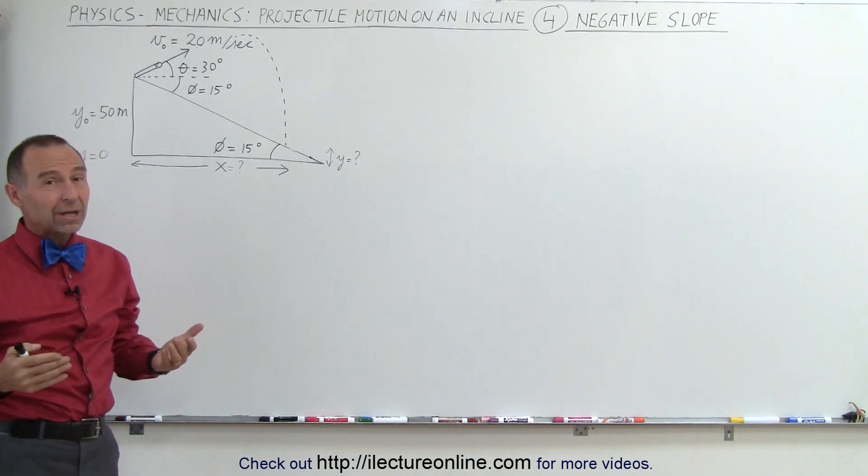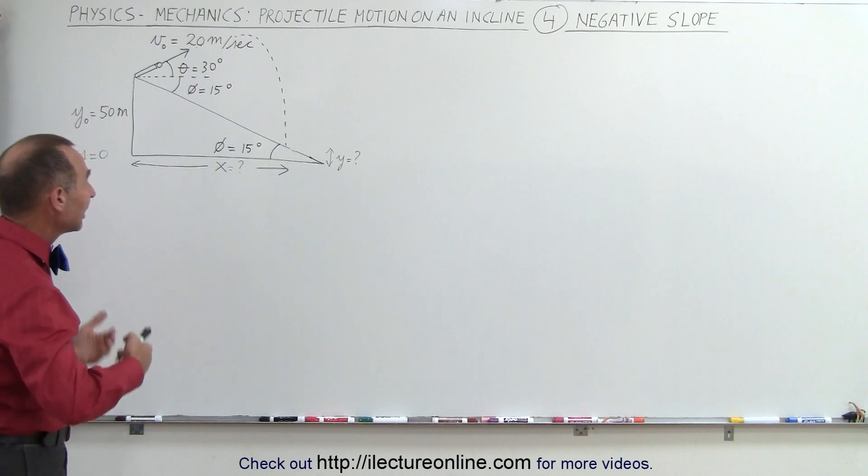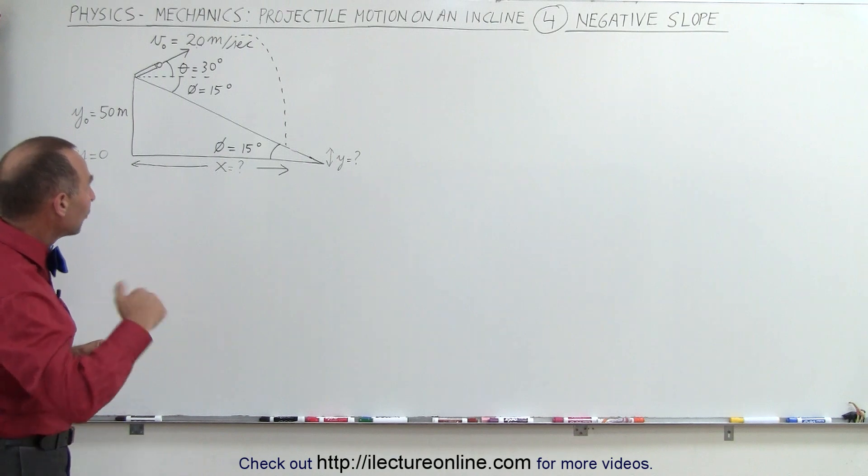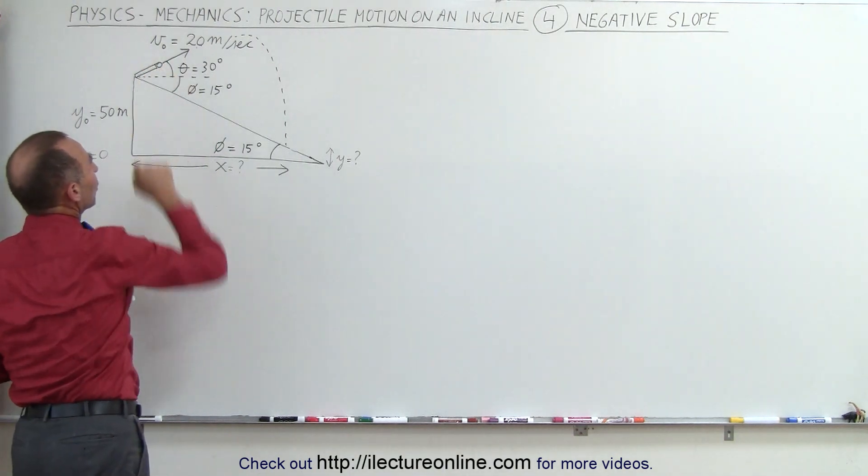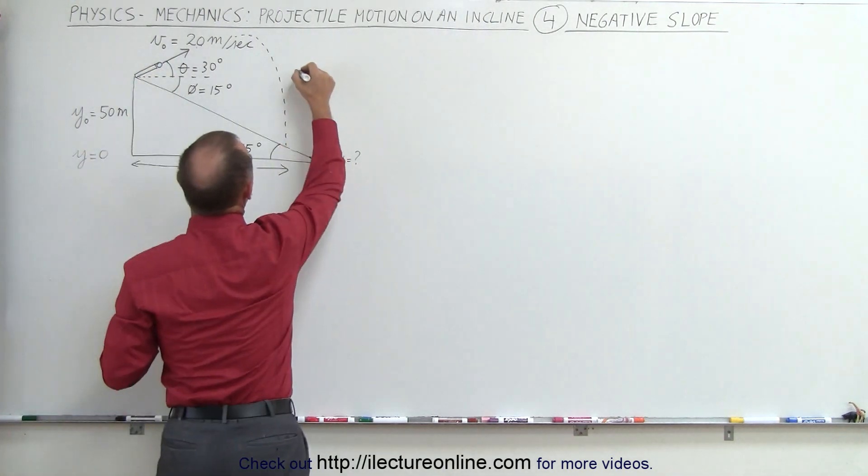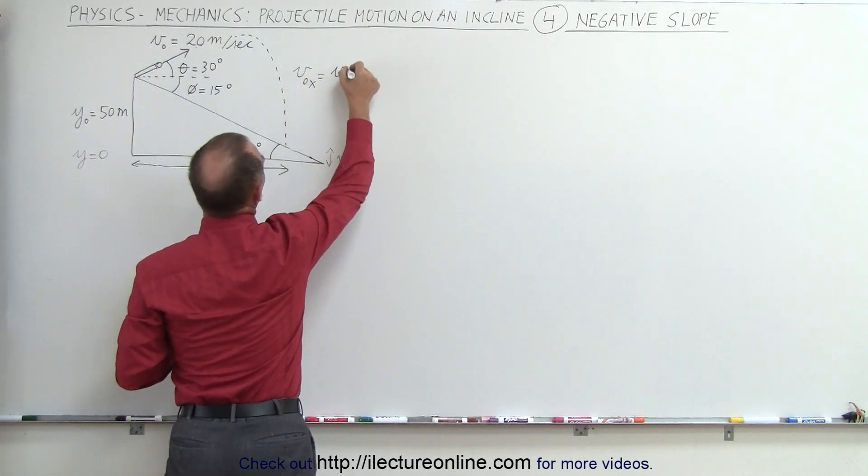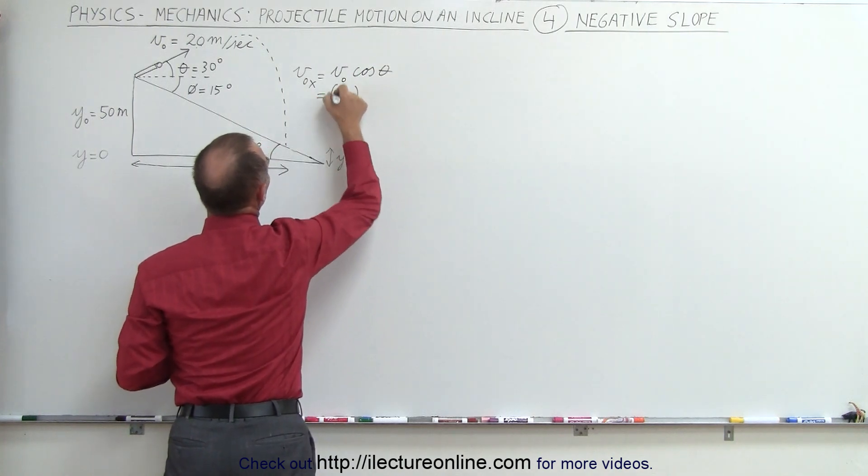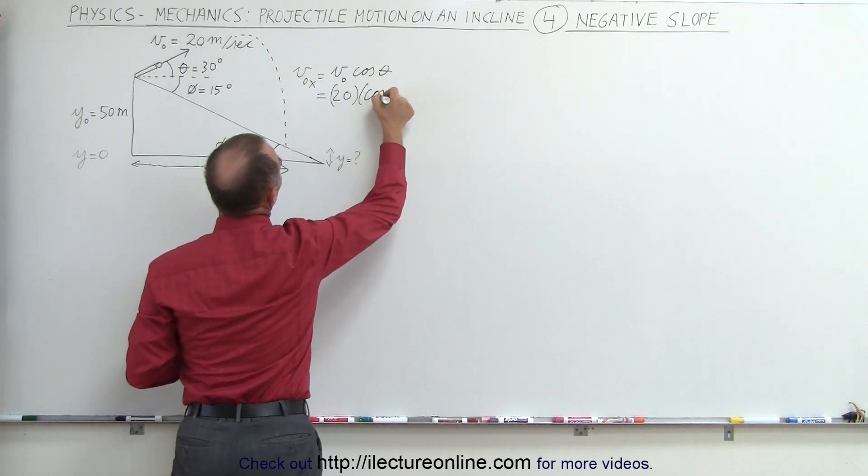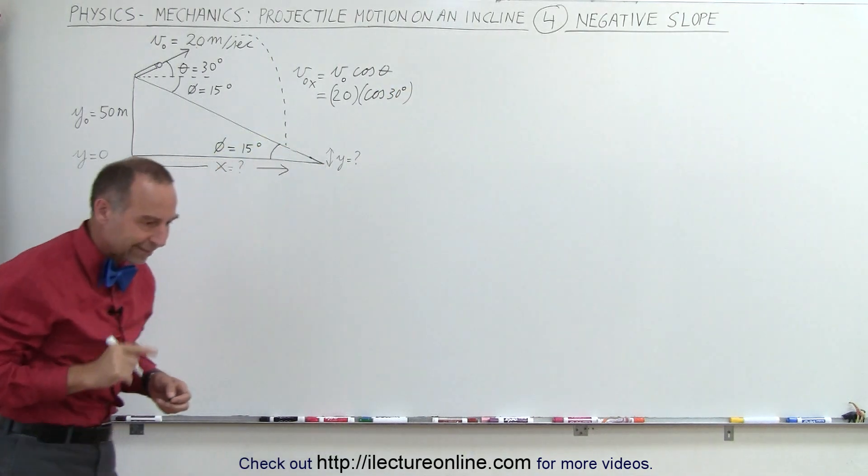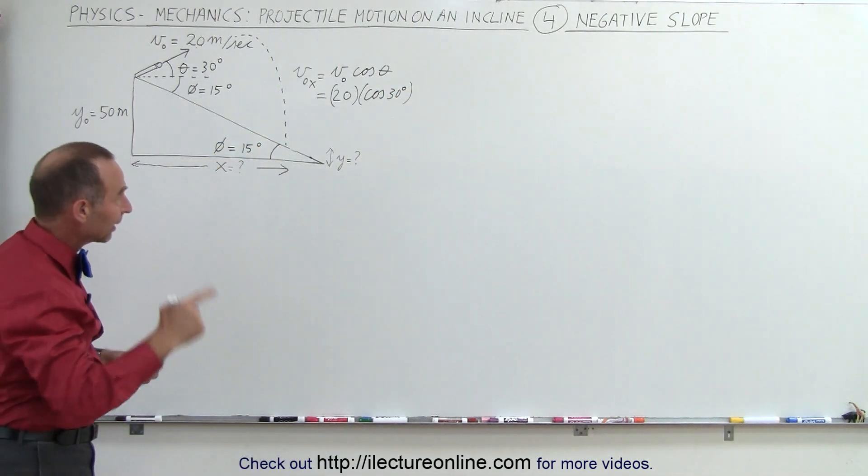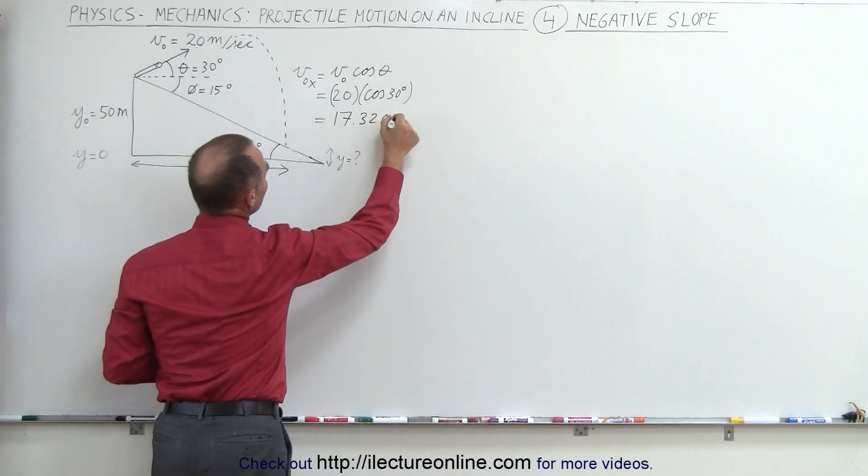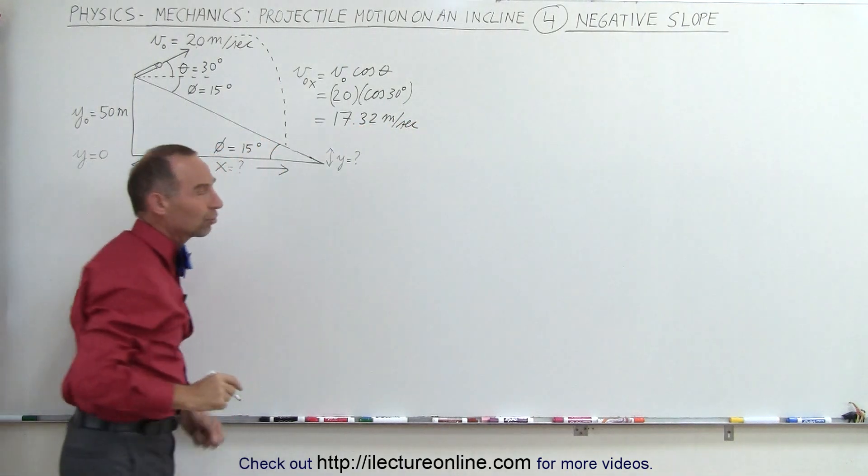Well, it's kind of the same way as we approach any projectile motion problem. Let's try to find the time in the air and let's start with the y component first. Before we do that, let's find the x and y components of the initial velocity. So in the x direction we have v initial in the x direction is equal to v initial times the cosine of the angle theta. So this would be 20 meters per second times the cosine of 30 degrees, which is 0.866. If we double that times 20, that should give us 17.32 meters per second as the initial velocity in the x direction.